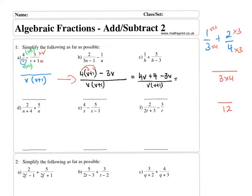So yes, good. We would then simplify this. So the 4v and the minus 3v are similar. So what's 4v minus 3v? Yep, so I've got 1v plus 4 over v times v plus 1.